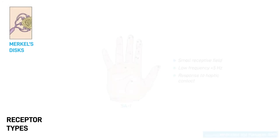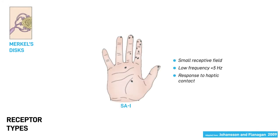Merkel's discs are slow-adapting type 1 or SA1. They also have small receptive fields and are sensitive to much lower frequencies. They are mainly activated by haptic contact.